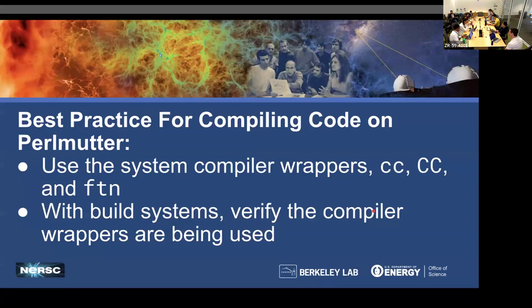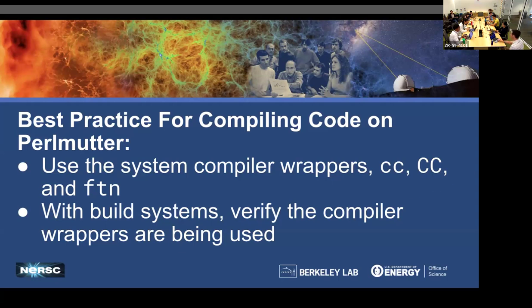Summary slide — best practices for compiling code on Perlmutter: use the system compiler wrappers — lowercase 'cc' for C, capital 'CC' for C++, and 'ftn' for Fortran. If you're using a build system like AutoTools or CMake, make sure that the compiler wrappers are pointing to the system Cray compiler wrappers and you will avoid many problems.